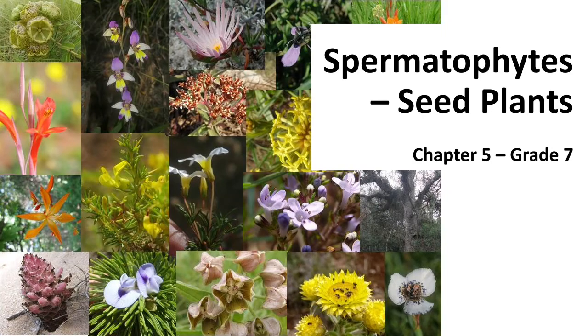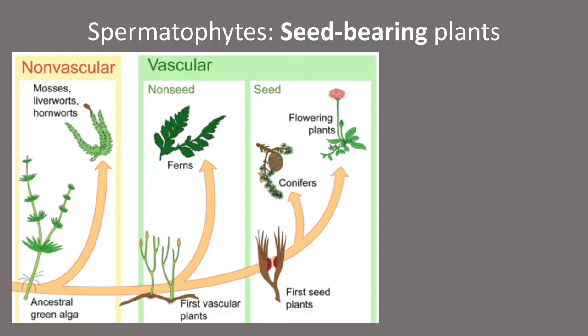Hello students. In today's video we will learn about spermatophytes, the last major group that comprises the plant kingdom. Compared to bryophytes and pteridophytes, spermatophytes is a group of higher plants because they possess vascular tissue, differentiated organ structure, a more complex life cycle, and reproduction mechanism — especially by the existence of seeds.